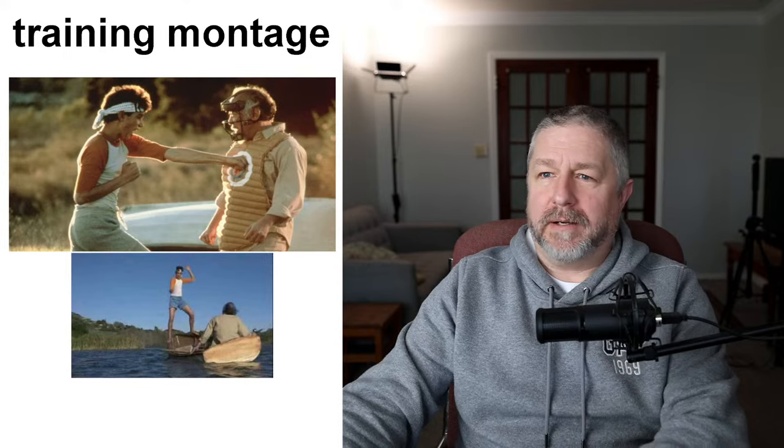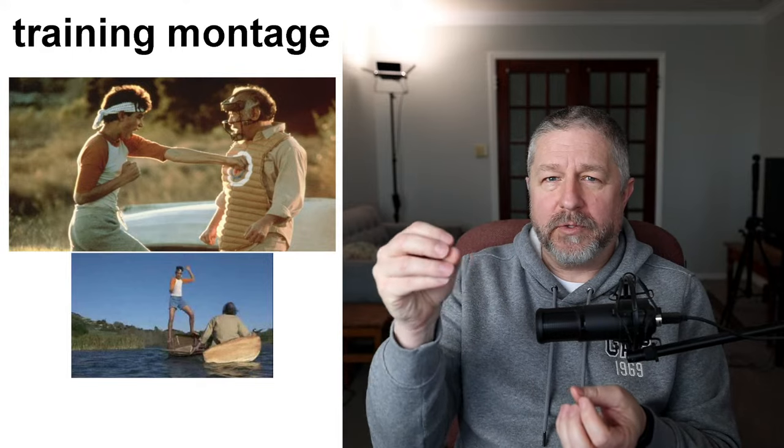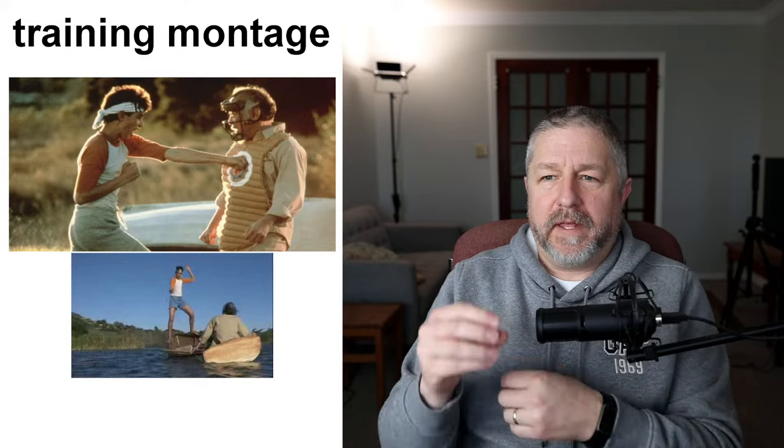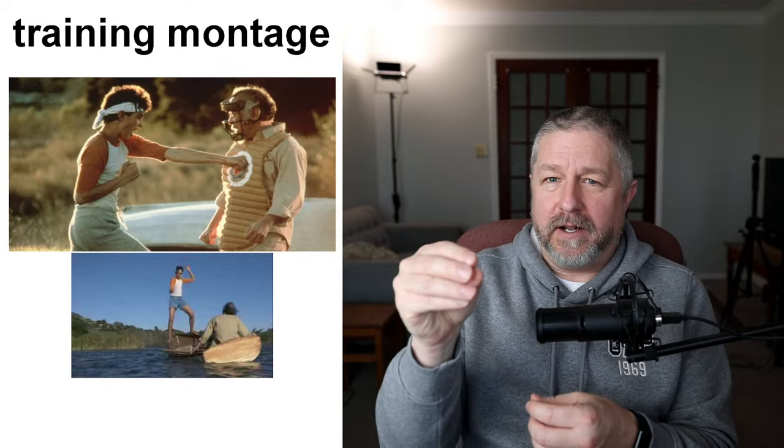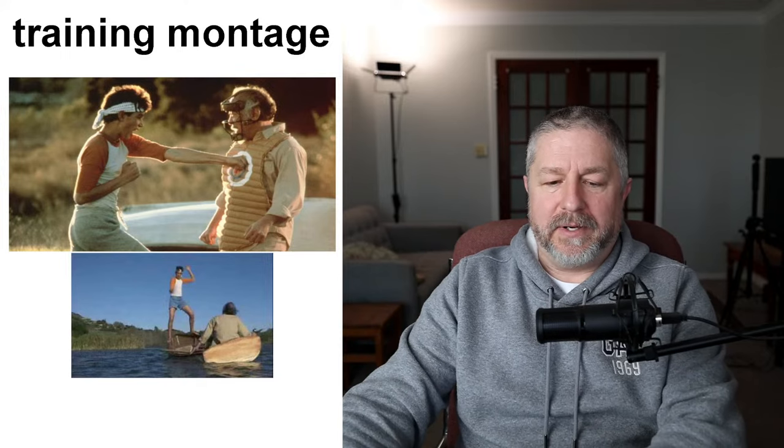There's also something called a love interest — the person the main character likes in a romantic way. In the Twilight movies, Edward's love interest was Bella and Bella's love interest was Edward. And there might be a training montage. In the Rocky movies they speed up time by showing clips of him doing a whole bunch of different training. In the Karate Kid movie they show a sequence where he trains in different ways over many days and weeks, with little clips of the training happening.